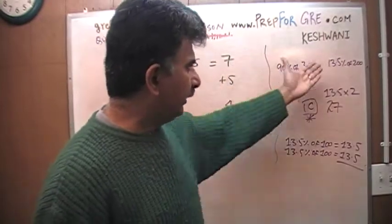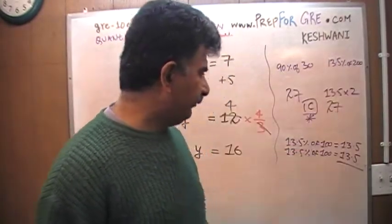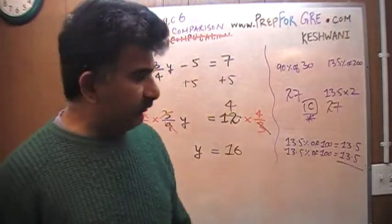Again, that's why I do it out here. 13.5% of 100 would have been 13.5. Of 200 is going to be twice as much. That's all.